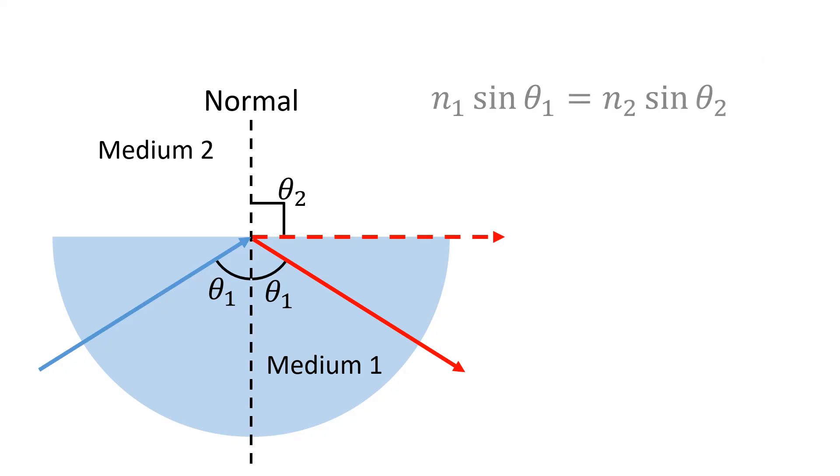We can actually work out what's happening using Snell's law again. We have to set θ₂ to 90 degrees. When medium 2 is air, n₂ is approximately 1.